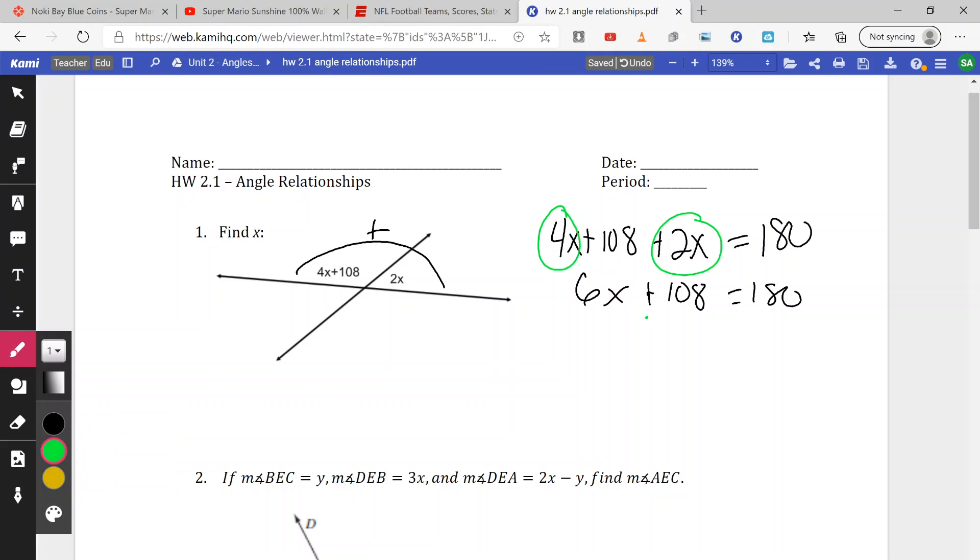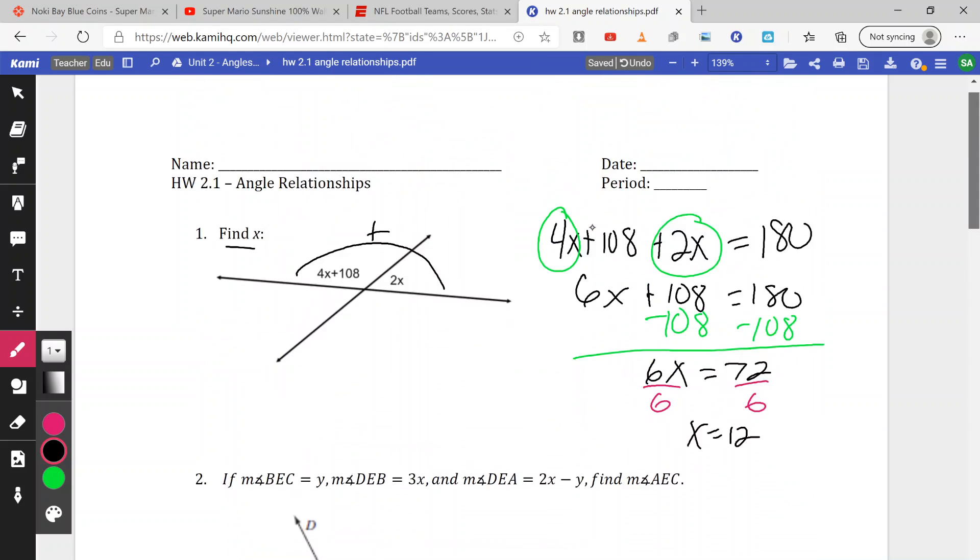I'm going to subtract the 108. So we get 6x equals 72. We can divide by 6 and we end up getting x equals 12. So again, finding x, we found x, we are set with this particular problem.